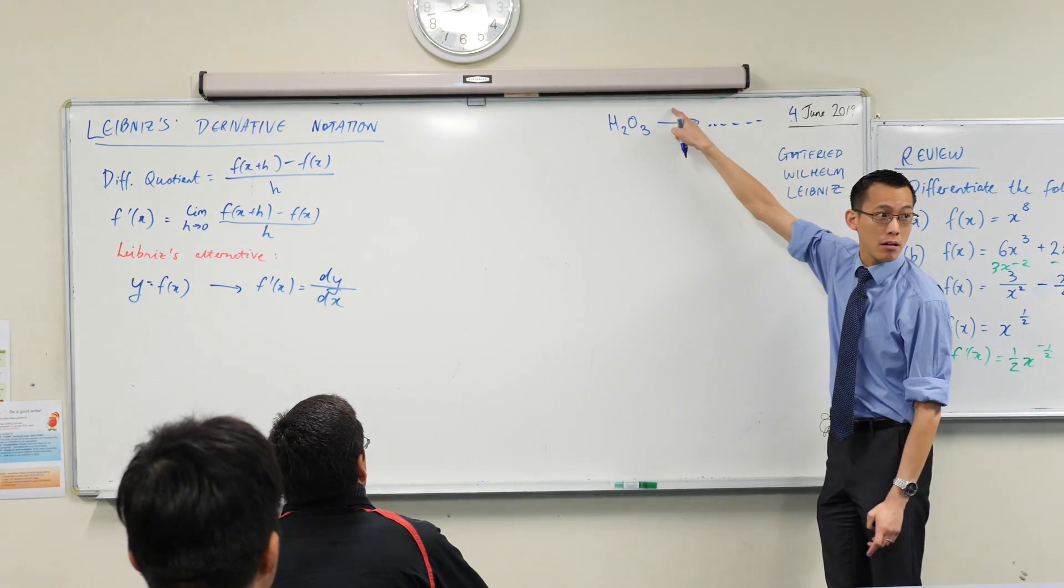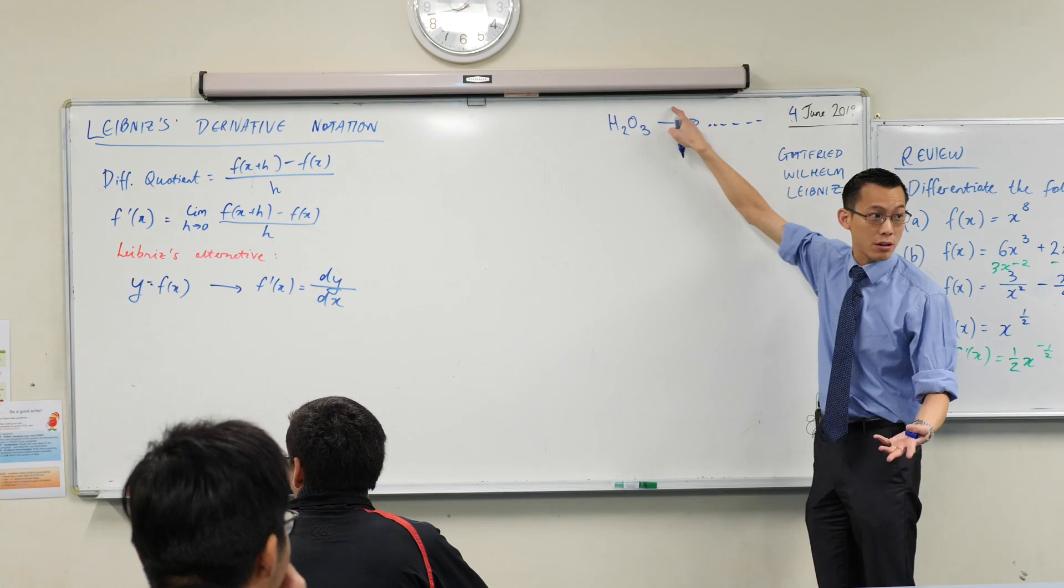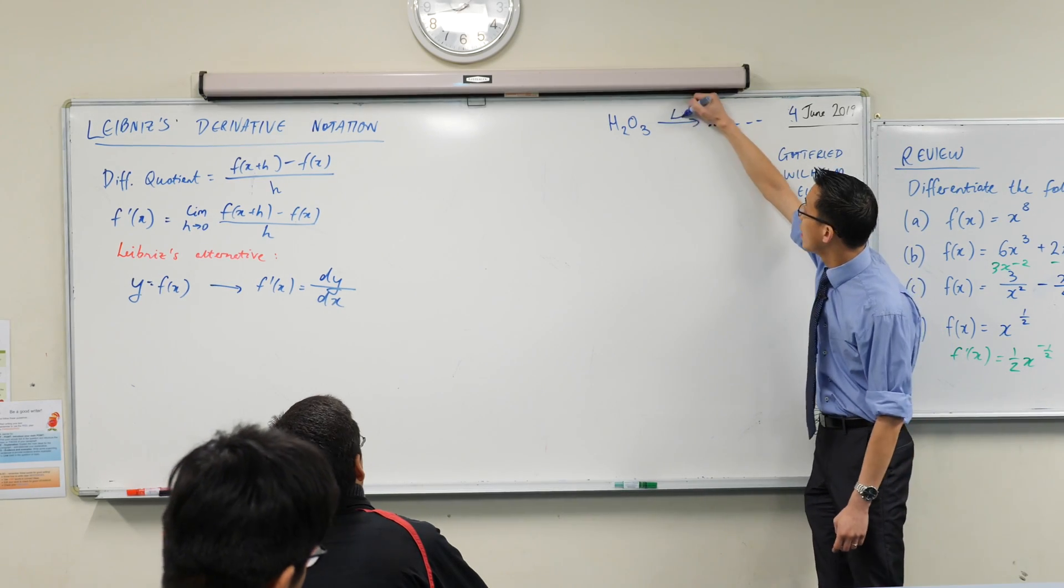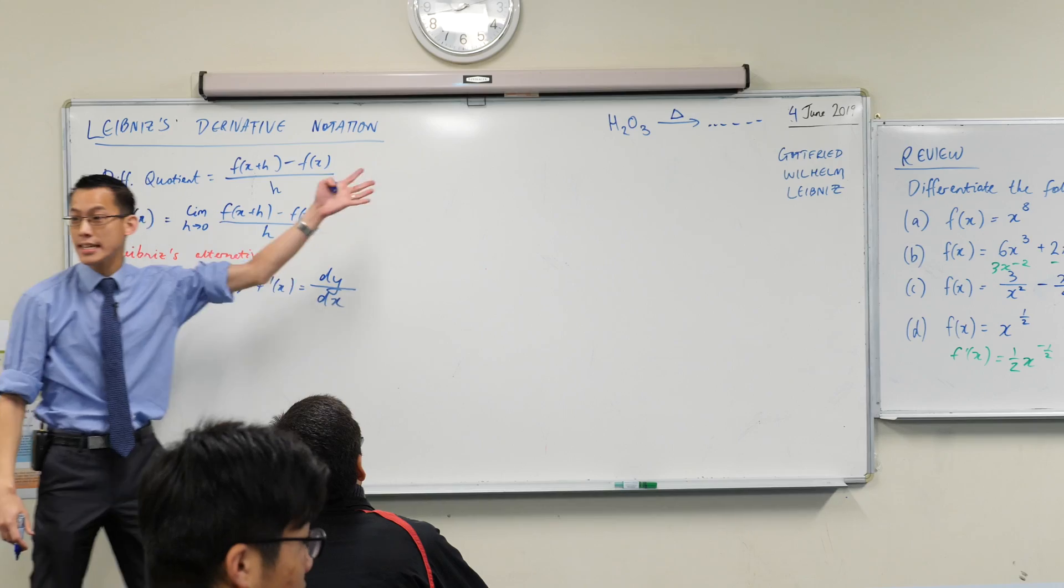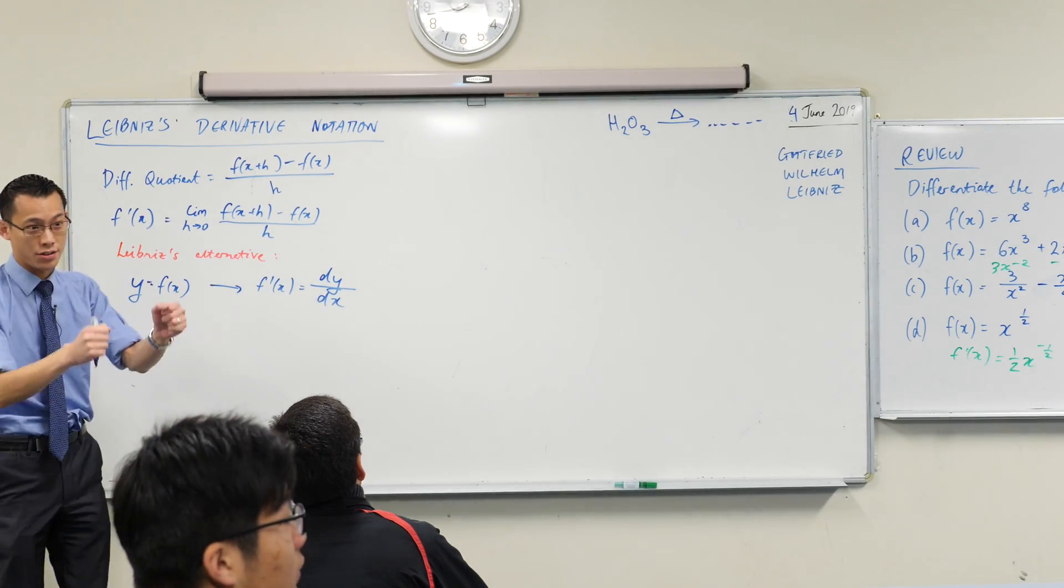Does anyone remember, what's the symbol we write up here? We write a little symbol here. It's actually a Greek letter. We write a delta. It's a triangle, but it's the Greek letter delta. What does it indicate? Change. It indicates change, right?